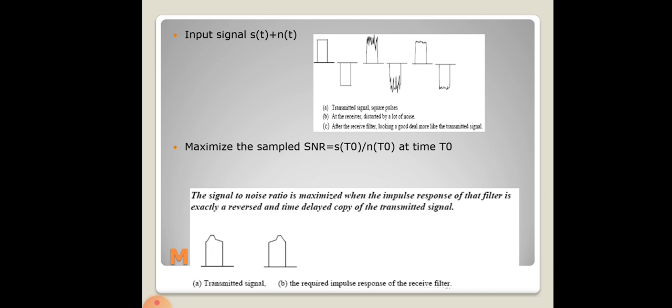For example, the input signal s(t) is mixed with noise n(t). The first diagram shows the undistorted transmitted signal — square pulses — while at the receiver the signal is distorted by noise. The signal-to-noise ratio is maximized when the impulse response of the filter is exactly the time-reversed copy of the transmitted signal, allowing the signal to be recovered. The required impulse response at the receiver side is shown in the second diagram.